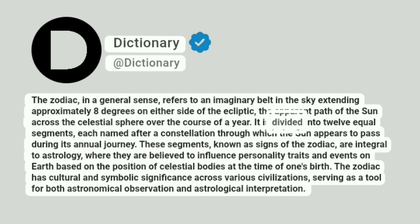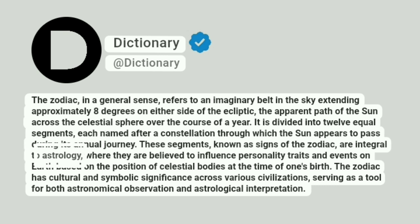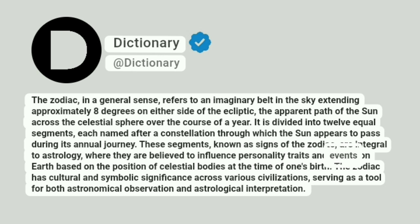It is divided into 12 equal segments, each named after a constellation through which the Sun appears to pass during its annual journey. These segments, known as signs of the Zodiac, are integral to astrology, where they are believed to influence personality traits and events on Earth based on the position of celestial bodies at the time of one's birth.